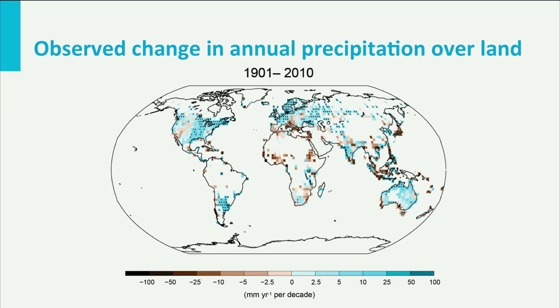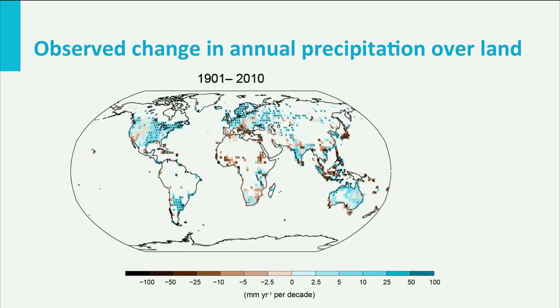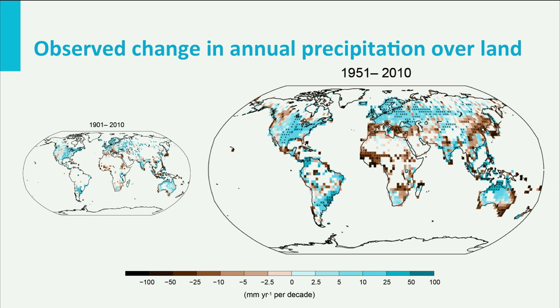Here we see the average change in the amount of rainfall during the last century. In the blue parts, global rainfall is increasing; in the brown parts it is decreasing. If we zoom in on the last 60 years, we see that these changes in rainfall are happening faster than before. Parts of the world have become wetter, other parts have become drier.